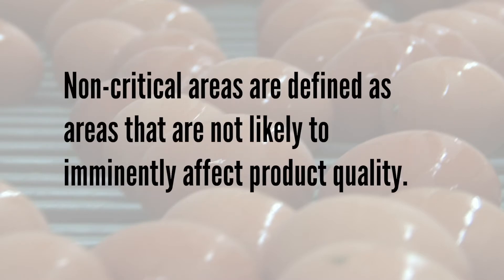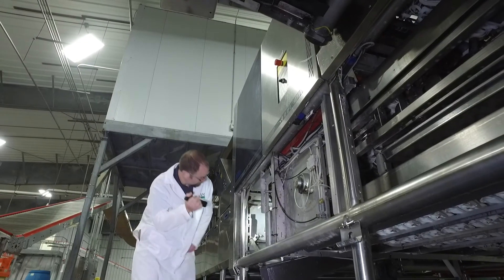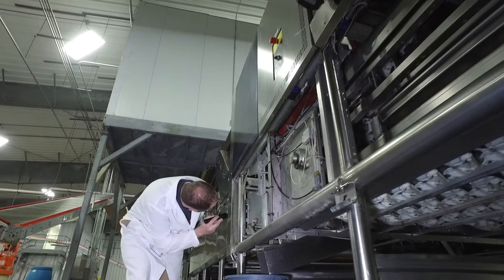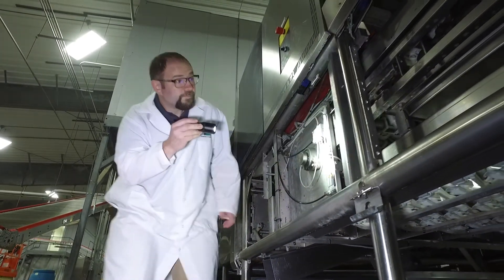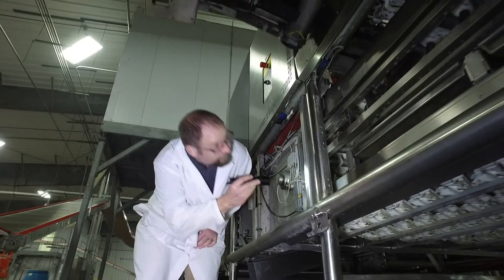Non-critical areas are defined as areas that are not likely to imminently affect product quality. Non-critical does not mean it is not important. Non-critical unsatisfactory conditions should be addressed after the processing line has been started, unless unable to safely do so during processing. In this module, the critical and non-critical areas of various removal systems present on the processing line will be identified and discussed.